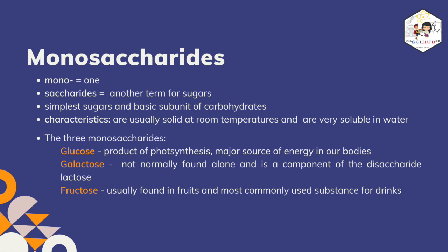We can derive the definition of monosaccharides based on the words it is made up of. Mono meaning one, and saccharides, an alternative term for sugars, make up the word monosaccharides. Based on these, monosaccharides are the basic subunits of carbohydrates. These carbohydrates are usually solid at room temperature and are very soluble in water due to their hydroxyl groups. The following examples are the three monosaccharides which serve as the basis for other carbohydrates: glucose, which you have encountered the most as it is a product of photosynthesis and one of the prerequisites for cellular respiration to produce energy; galactose, which is not normally found alone and is a component of the disaccharide lactose; and lastly, fructose, a monosaccharide commonly found in fruits and used in most commercial drinks.